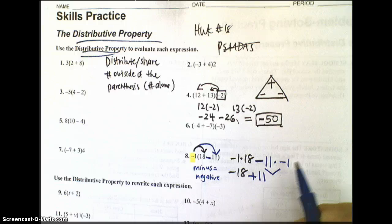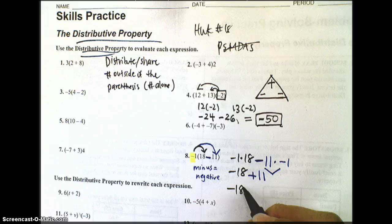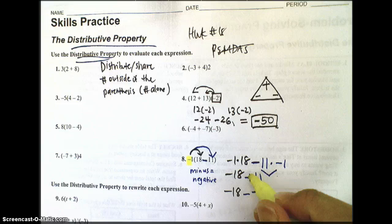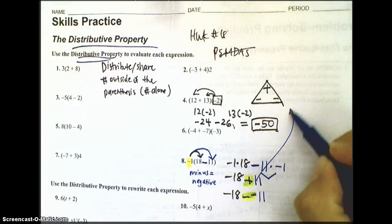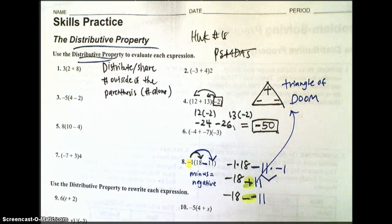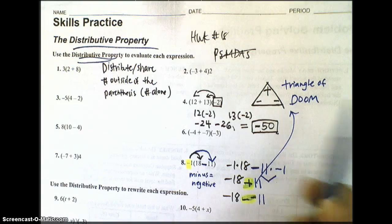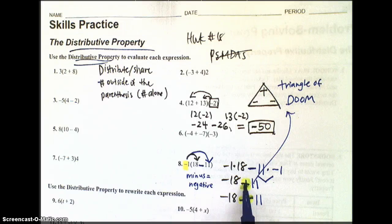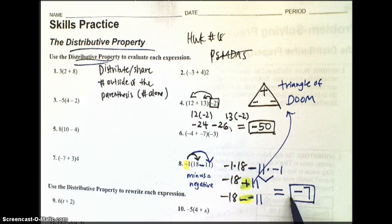If you don't choose to do the negative, then what you'll still get instead is you'll have negative 18 minus a negative 11. Essentially, a minus minus is the same as a positive. Again, you can use this triangle of doom to help you if you forget how to multiply your positive and negative integers. So my final answer here is going to be negative 7. This is number 8.